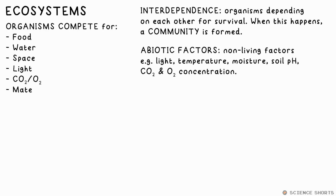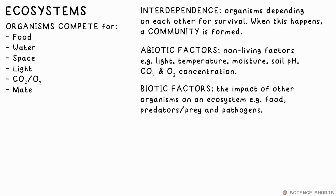Abiotic factors in an ecosystem are the non-living aspects, for example light, temperature, moisture, soil pH, CO2 and O2 levels in the air. Biotic factors are due to organisms and things like food that's available, predators, prey, other organisms around, pathogens, breeding behaviour and more.